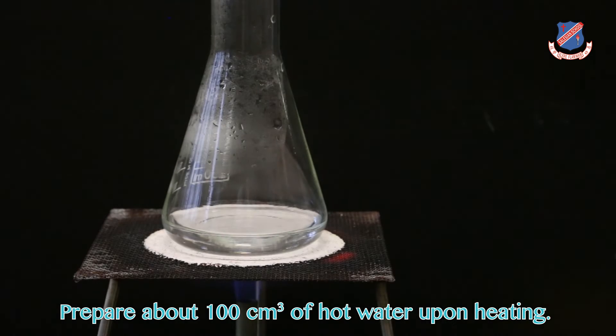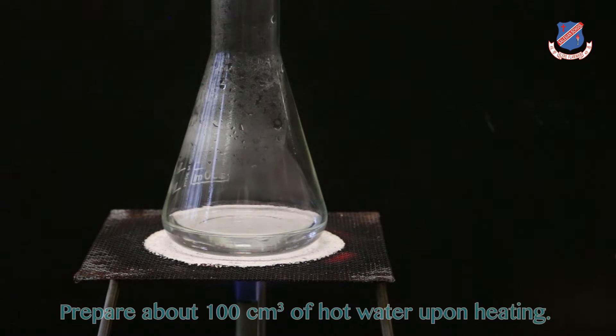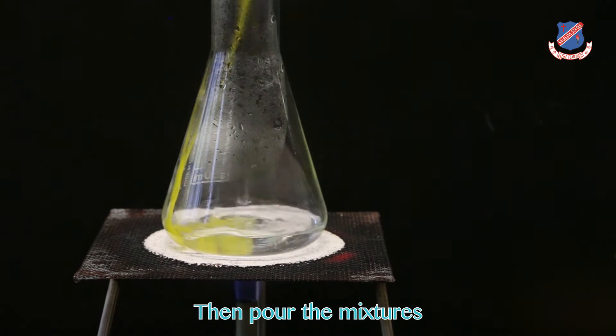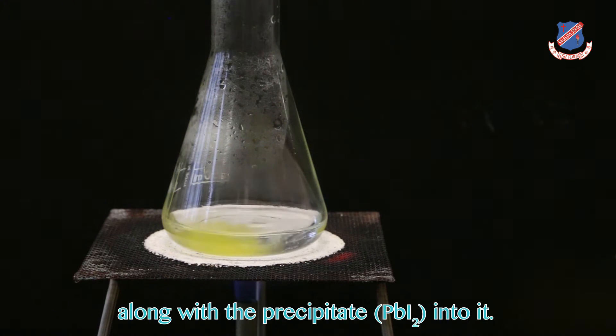Prepare about 100 cm³ of hot water upon heating. Then, pour the mixture along with the precipitate into it.